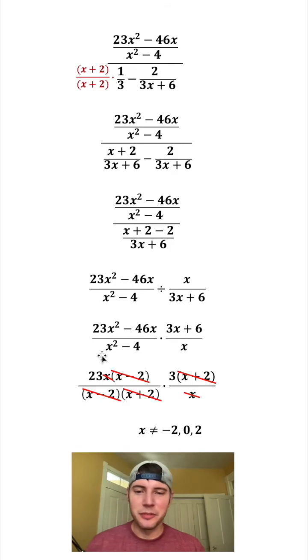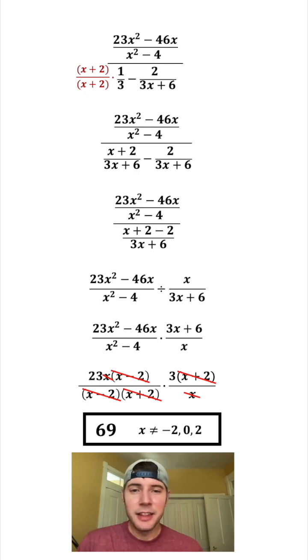Nothing else will cancel out, so now we're ready to simplify. All we have left after everything canceled is 23 times 3, and that is equal to 69. And this is our complex fraction simplified. How exciting!